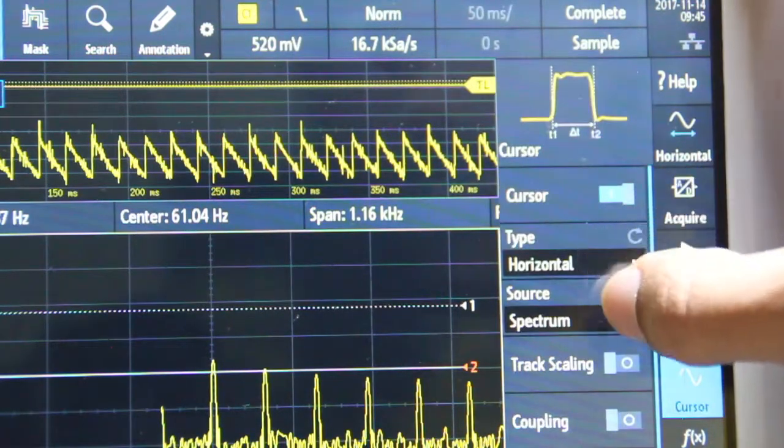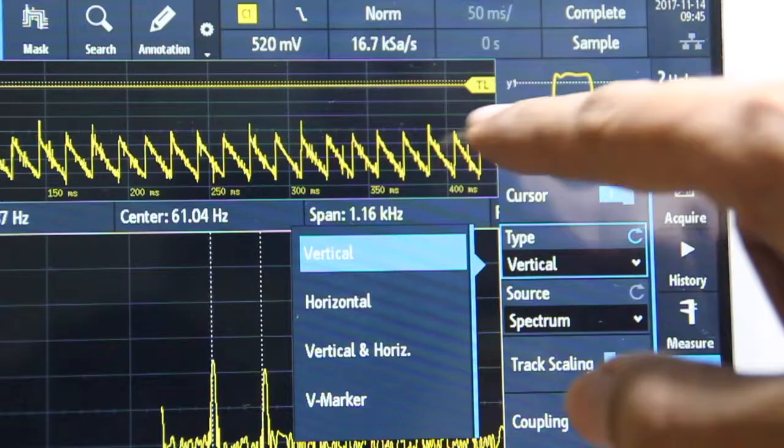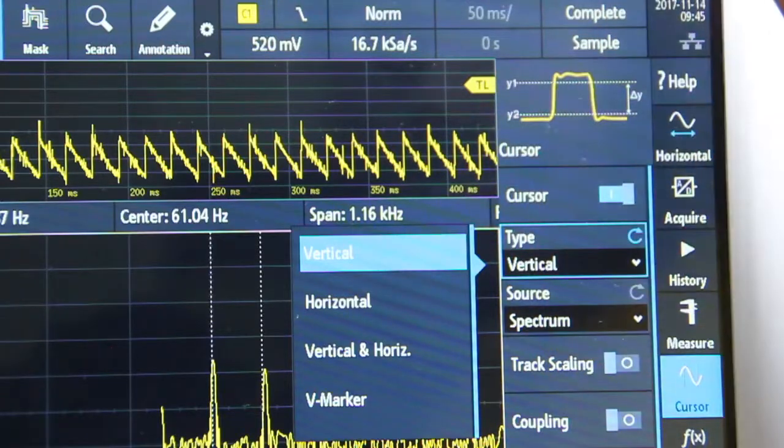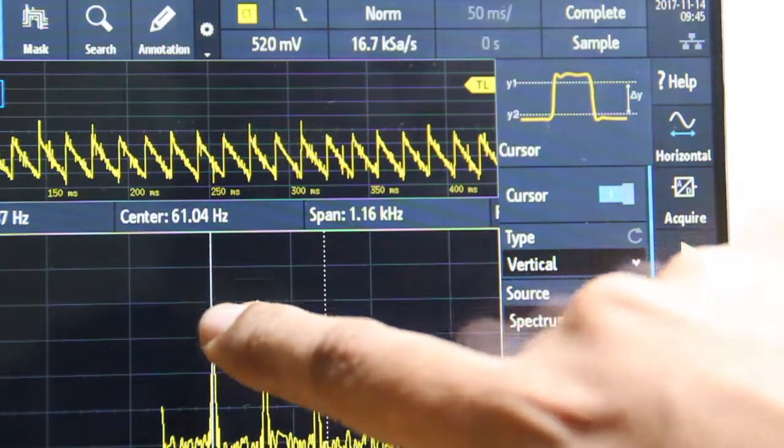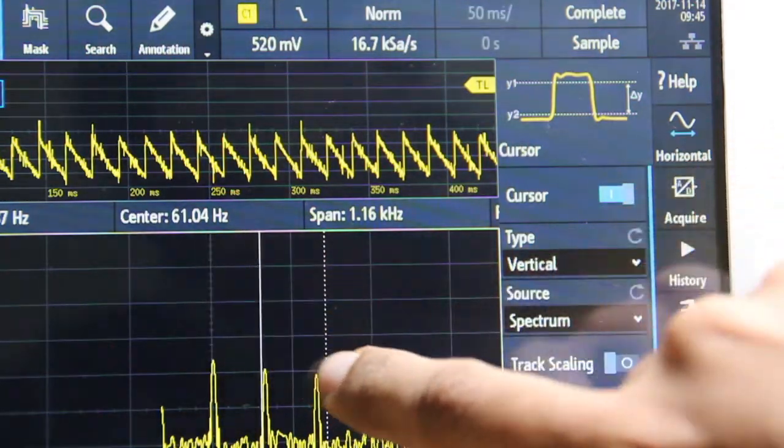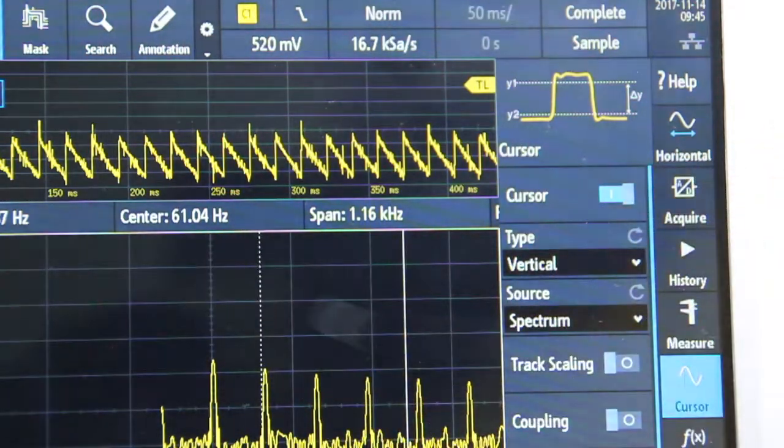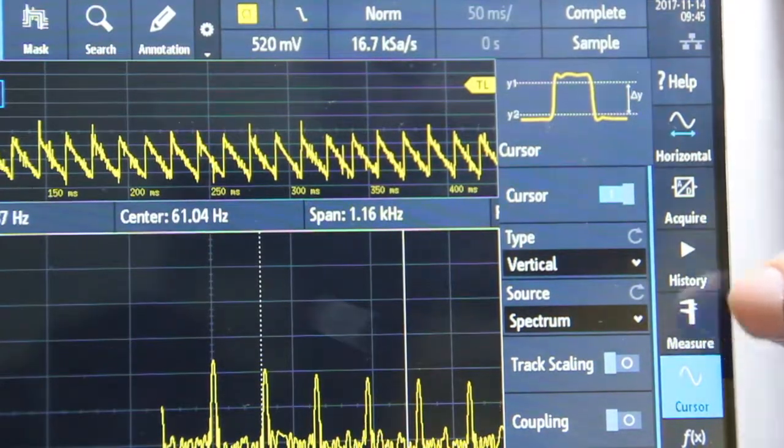If I go back into the cursor menu, if I put it on vertical, the cursor that's supposed to be a vertical delta, the labeling is correct but the wrong type of cursors kind of pop out. How weird is that.